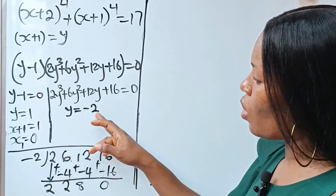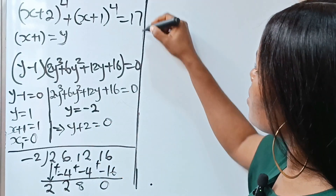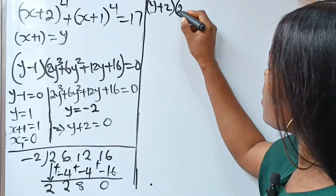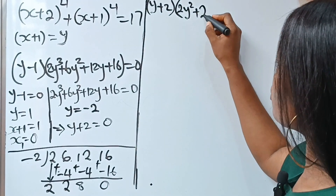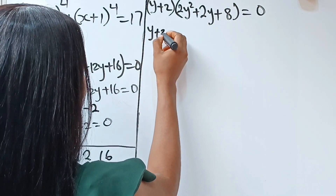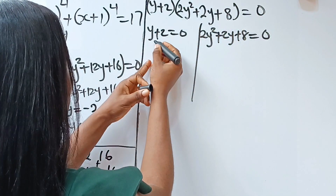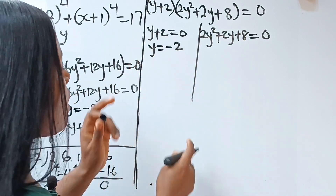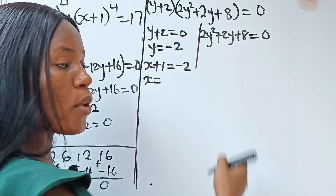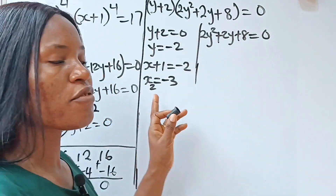Since y equals minus 2, y plus 2 is a factor equal to zero. This gives us y plus 2 multiplied by 2y squared plus 2y plus 8 equals zero. From y plus 2 equals zero, y equals minus 2. Since y equals x plus 1, we get x plus 1 equals minus 2, so x equals minus 3. This is our second value of x.